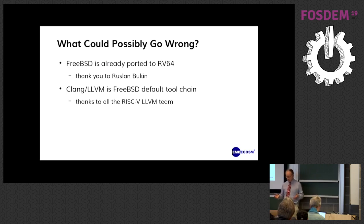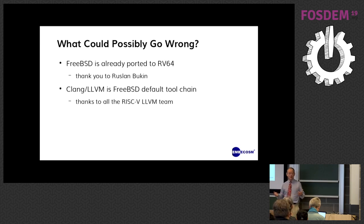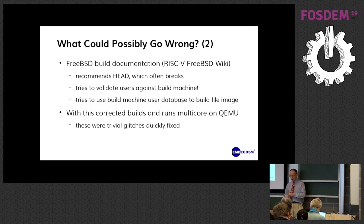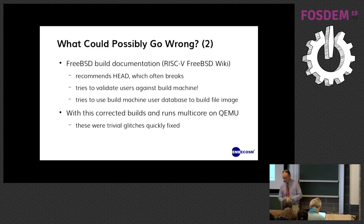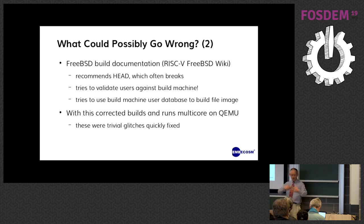FreeBSD had already been ported to 64-bit RISC-V — thank you to Ruslan Bukin who kicked off the project at Cambridge University and others who have since contributed. Clang/LLVM is the FreeBSD default toolchain, so that ought to be fine. But the documentation, as you'd expect for something still developing, works with HEAD — and quite often HEAD isn't going to work straight away, so actually start from a stable point. There were also issues where the build validated users against the build machine rather than the target, and it used the build machine's user database rather than the target database to build the file image. Those were corrected fairly trivially.